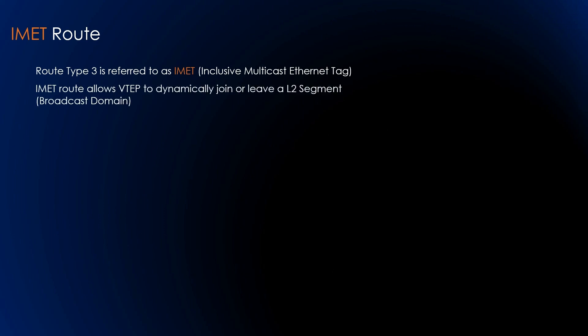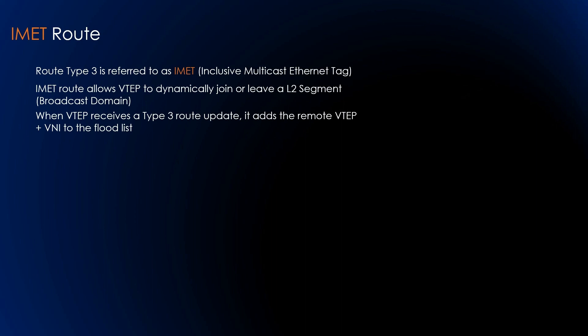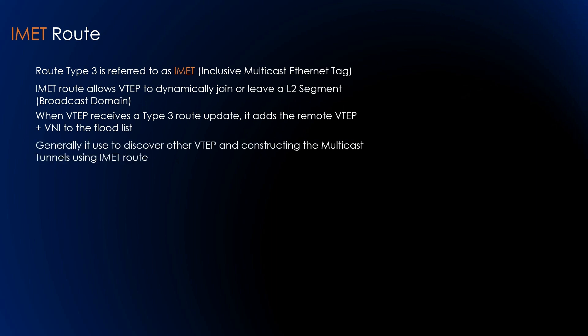Type 3 routes allow VTEPs to dynamically join or leave a broadcast segment. When a VTEP receives a type 3 route, it adds the remote VTEP plus VNI to the flood list. In general, route type 3 is used to discover other VTEPs and construct the multicast tunnel using IMET routes.